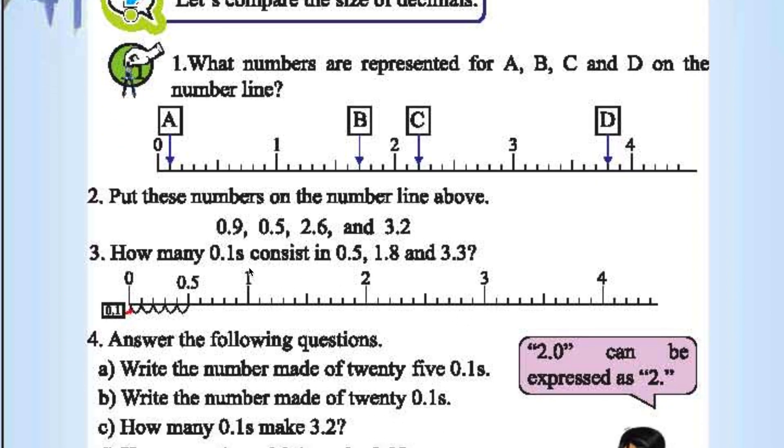How many 0.1's consist in 0.5, 1.8, 3.3. 0.5, 0.5. 1, 2, 3, 4, 5. 1.8. 1.8 x 10. That is 18. 3.3, 3.3 x 10. 33.